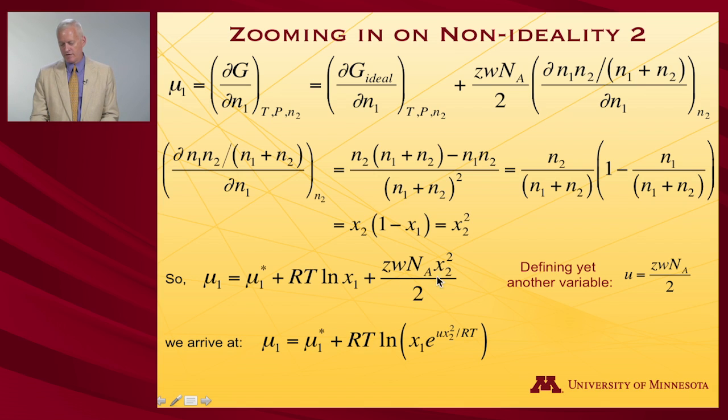When I do that, I arrive at the chemical potential is μ₁*, that's still there. RT log x₁, that's still there. But I want to just write this as a single logarithm. So this became u x₂ squared. Well, let me write that as log e^(u x₂²/RT). And in which case, I can embed within this the e^(u x₂²/RT), and have a single simple expression. And that's the activity. That's how we express non-ideal solutions to look like ideal solutions. We have in place of x sub 1, we've got something else.